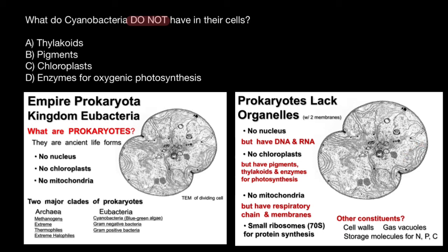Also, the cells have small ribosomes, which are smaller than those in eukaryotes, used for protein synthesis and other metabolic functions. The constituents include cell walls, gas vacuoles, and storage molecules for nitrogen, phosphorus, and carbon.